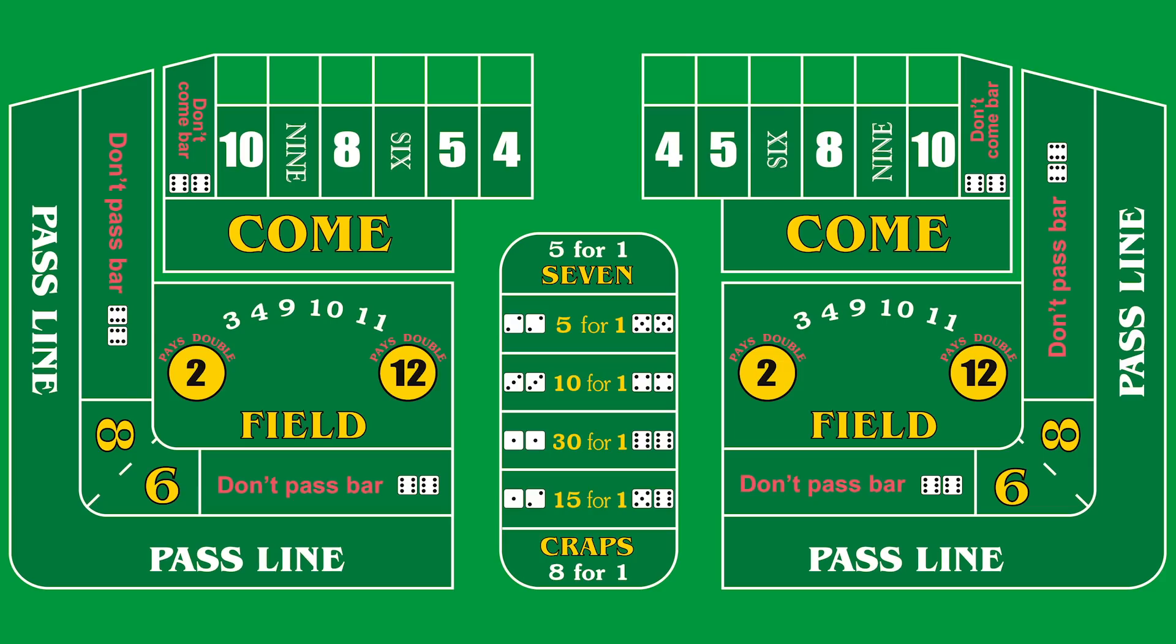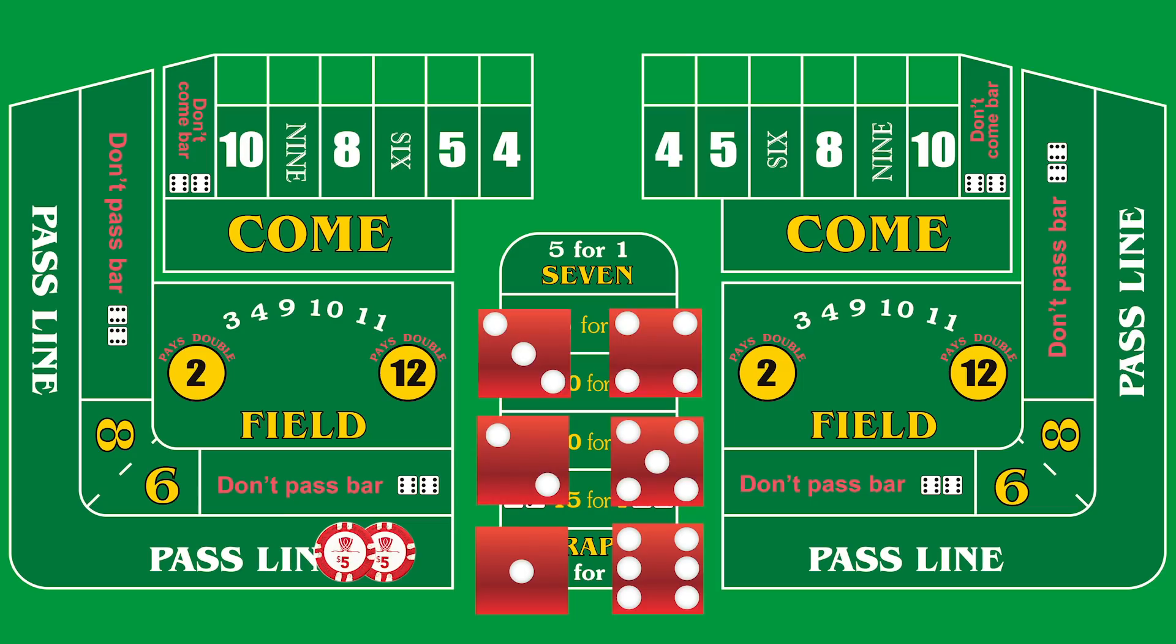So for example, if you bet $5 on the pass line, the most common bet, and your first roll is a 7, you win $5. It does not matter at all whether it's a 6-1 or 5-2 or 4-3.